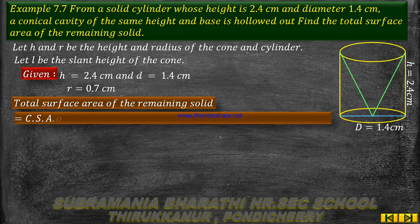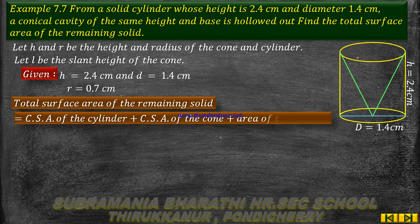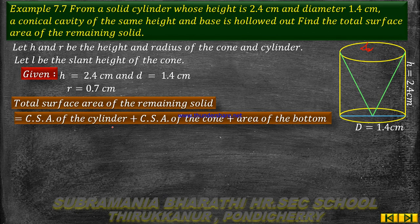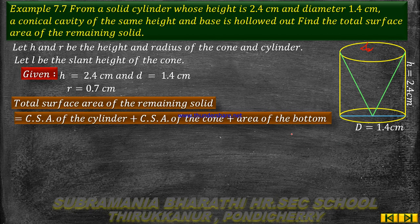Total surface area of the remaining solid is equal to: CSA of cylinder plus CSA of cone plus area of the bottom circle. That is: 2πrh + πrl + πr².